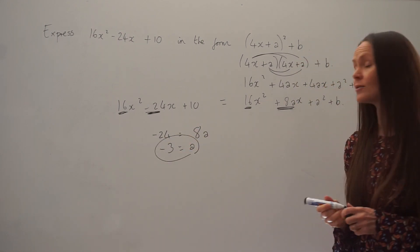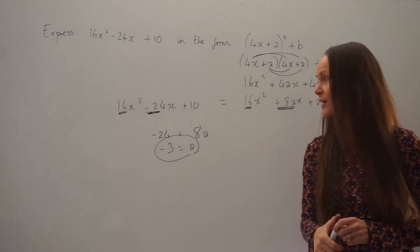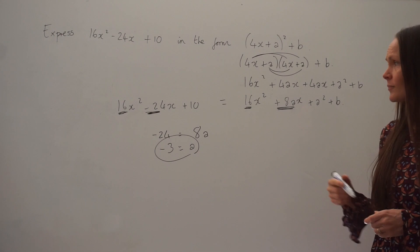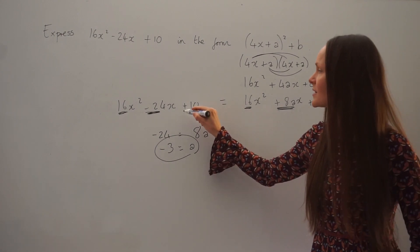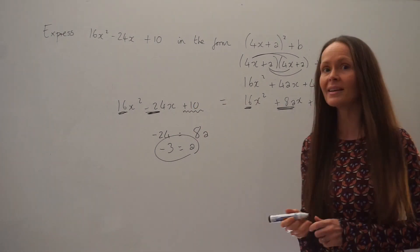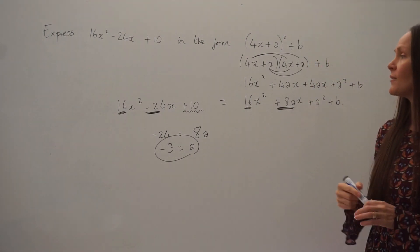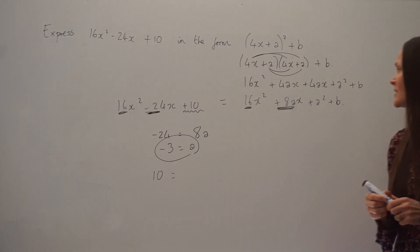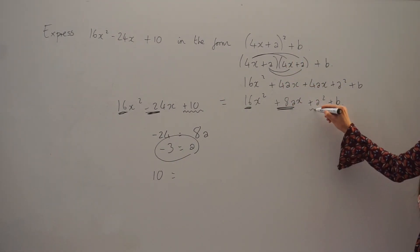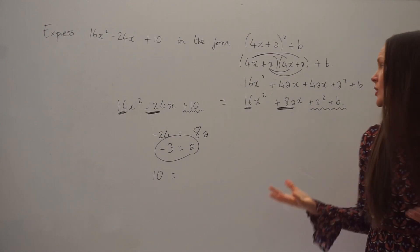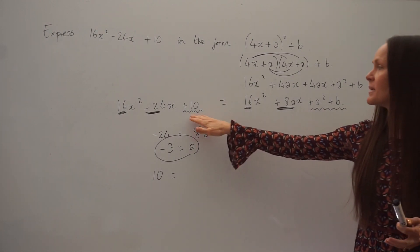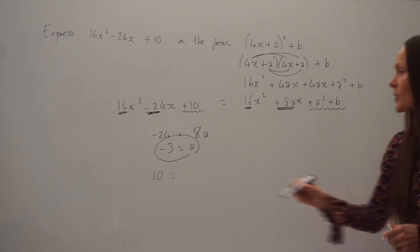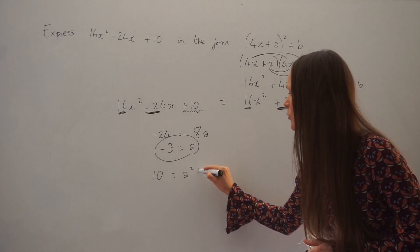So we've already worked out the value of a, which is negative 3. Next, we're going to work out the value of b. You have to look at the number by itself without the x. On the left-hand side, this is the number 10. On the right-hand side, it's a squared plus b — there's no x term here. So this number 10 has to equal a squared plus b. I'm going to write that down and form a second equation.